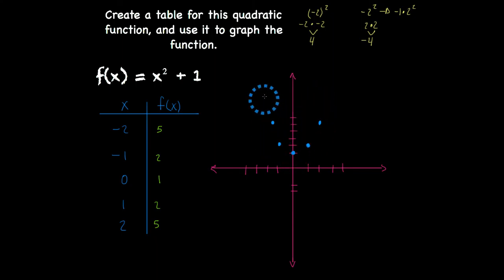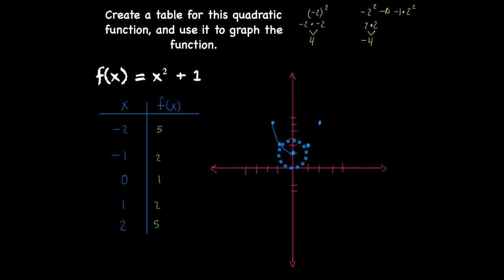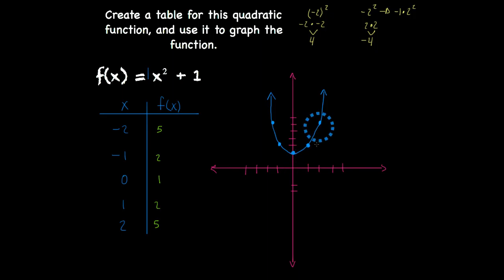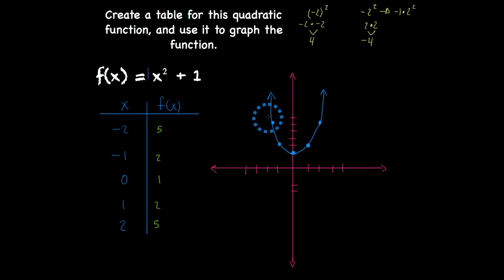From here, all I have to do is draw a line through these points. This curve is moving upward and it's going to continue to move upward. Going back to the function — my coefficient, the value in front of x, is a positive 1. Since that's a positive number, I know that my parabola is going to be moving upward. That's one way to determine if you have an upward-facing parabola.